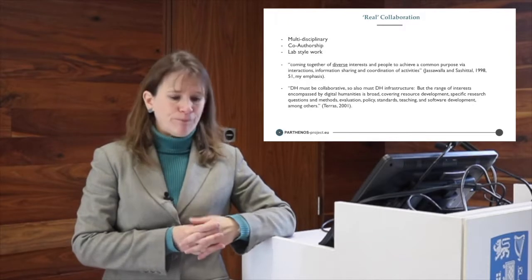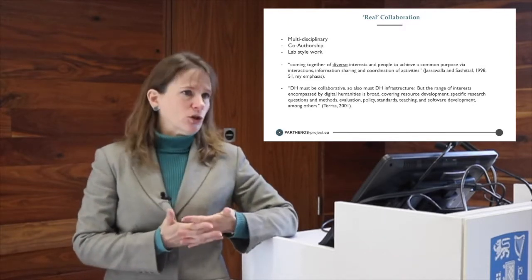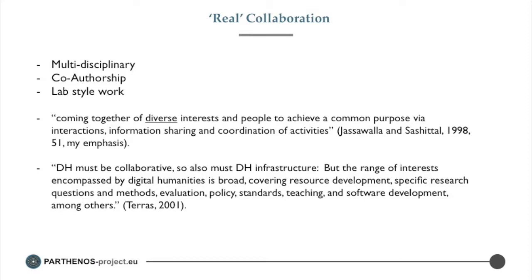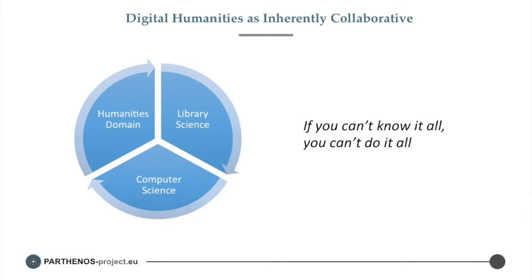In terms of digital humanities research infrastructure, this quote from Melissa Terrace captures quite a bit of what we need to understand: 'Digital humanities must be collaborative' — and so must DH infrastructure. But the range of interests encompassed by digital humanities is broad, covering resource development, specific research questions and methods, evaluation, policy, standards, teaching, and software development, among others. So we have to recognize that collaboration must be part of what's there, it must be about diversity, but how exactly that collaboration is developed needs to be left open and understood in a broad, multifaceted way.